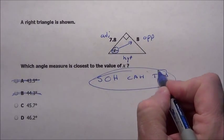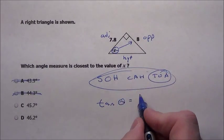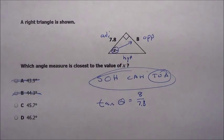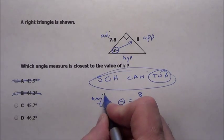That's the tangent function. So the tangent of theta is equal to opposite 8 over the adjacent 7.8. So now to get theta, I've got to take the inverse tangent of both sides.